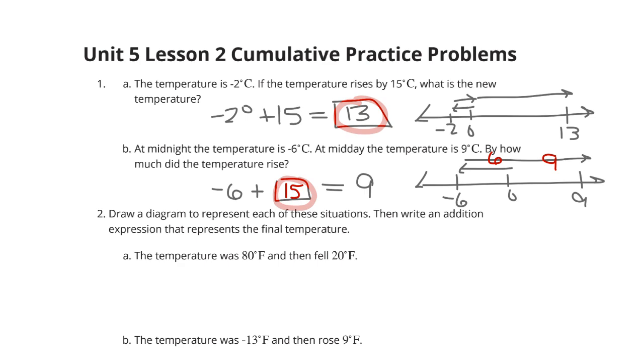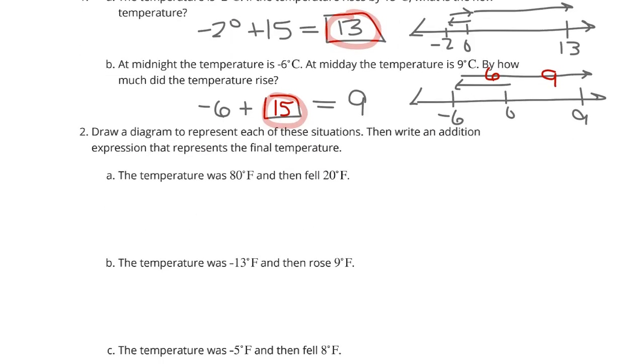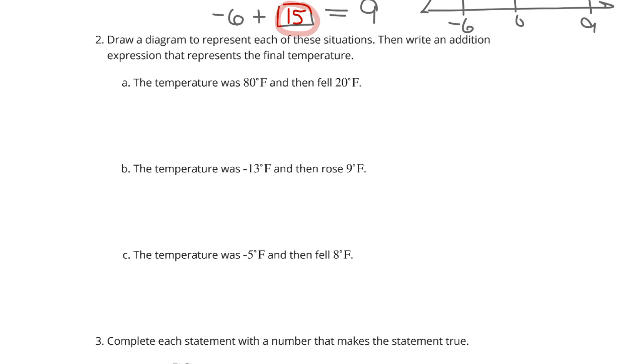Question 2, draw a diagram to represent each of these situations, and then write an addition expression that represents the final temperature. The temperature was 80°F and then fell 20°F. Start off with our number line. We'll start at 0 and go up to 80. We're falling 20 degrees. Help me, I'm falling. It's going to leave us at 60 degrees. And so 80 plus -20.